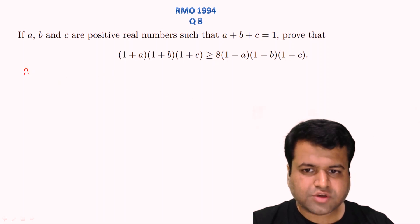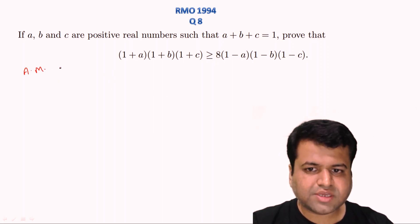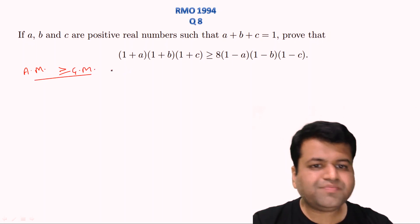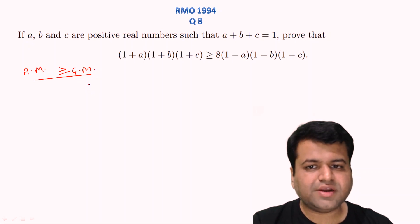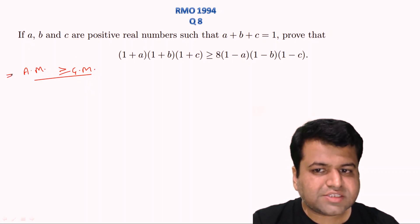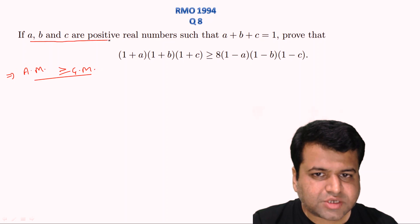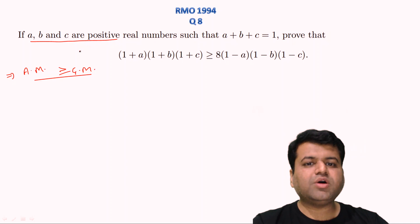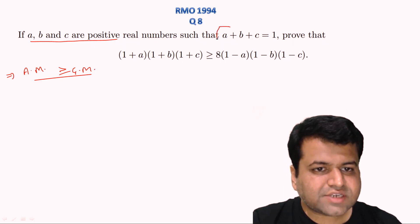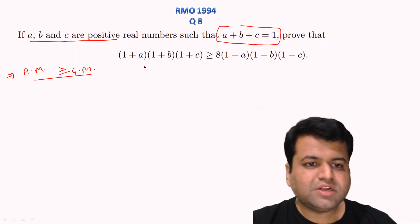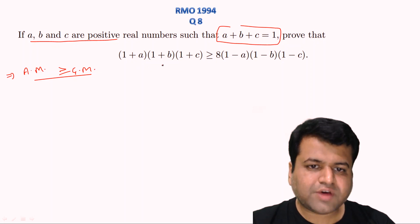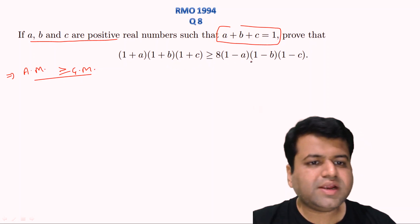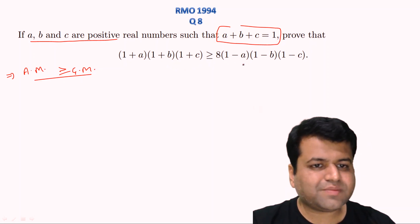As you know, most inequality questions can be done using the AM ≥ GM inequality. This question can also be done using AM ≥ GM. The biggest hint for applying this inequality is that the numbers must be positive, and it was clearly mentioned in the question that a, b, c are positive real numbers satisfying a + b + c = 1. We need to prove that (1 + a)(1 + b)(1 + c) ≥ 8(1 − a)(1 − b)(1 − c).